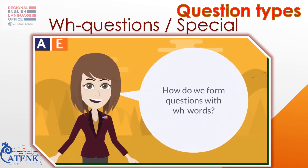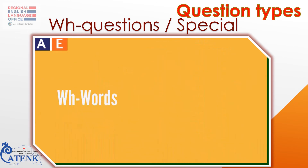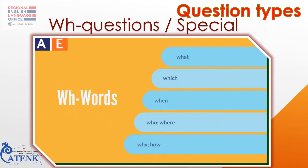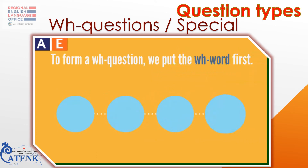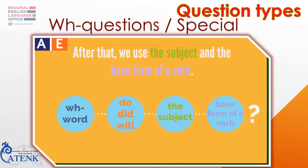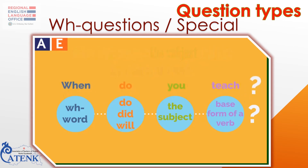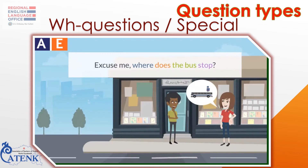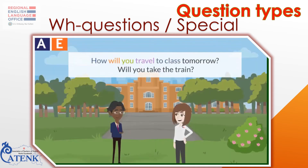How do we form questions with WH words? WH words include what, which, when, who, where, why, and how. To form a WH question, we put the WH word first. Then we can use do, did, or will. Do is for the simple present, did is for the simple past, and will is for the future. After that, we use the subject and the base form of a verb. For example: 'Excuse me, where does the bus stop?' 'How will you travel to class tomorrow?'